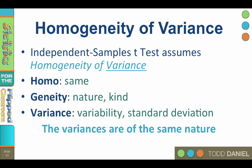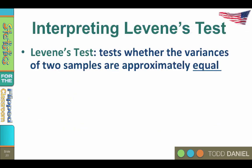The variance does not have to be precisely equal, just close enough. So how do you know if the variance is close enough to be called homogenous or not? We use a test called Levine's test for equality of variance, which tests whether the variances of two samples are approximately equal.